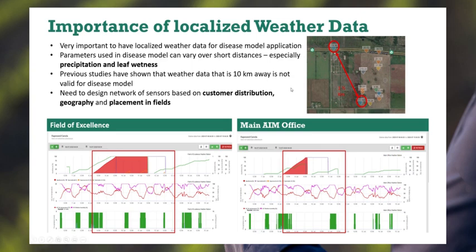The importance of localized weather data cannot be underestimated. We cannot drive a model for potato late blight off data that's 10 kilometers away — we need to know the conditions in the field. As shown here, we have one station at the main office under grass and one in the actual canopy. We see a very large, significant period of disease development with high humidity and leaf wetness under the canopy, versus a much shorter period with lower humidity and lack of leaf wetness at the office station. So we need to have the station at the field to get proper data to drive the model.